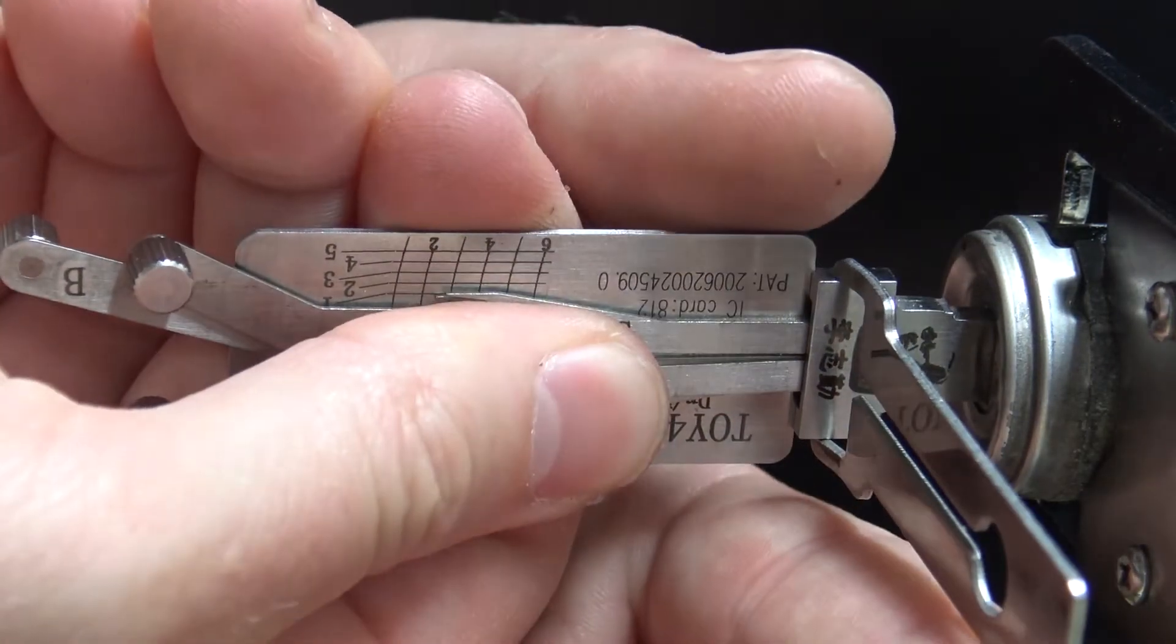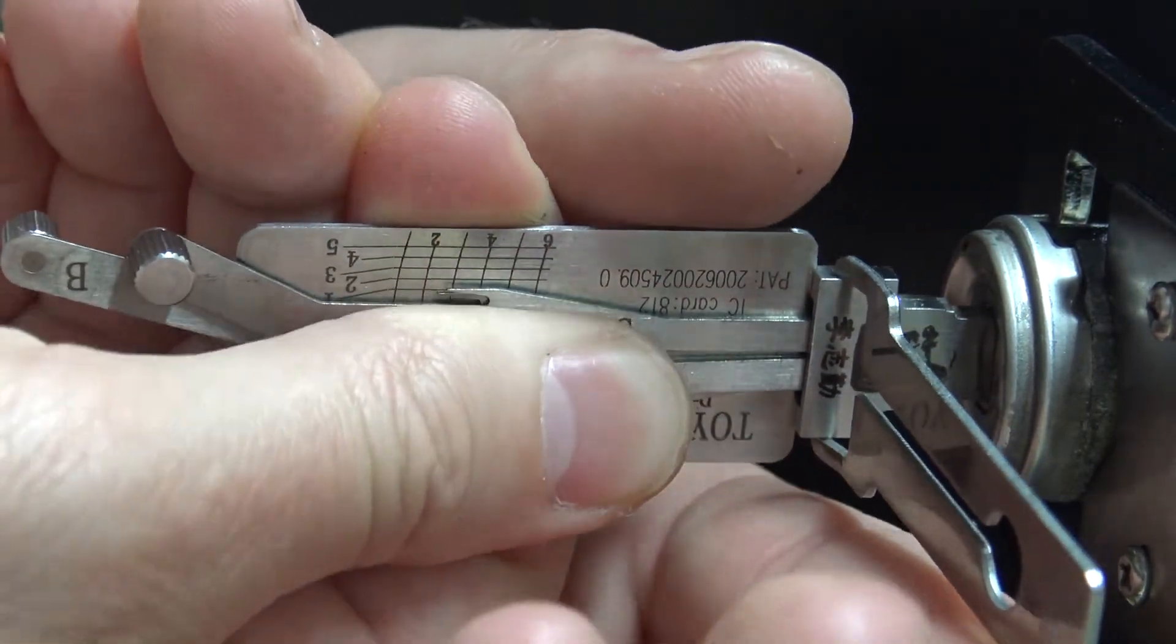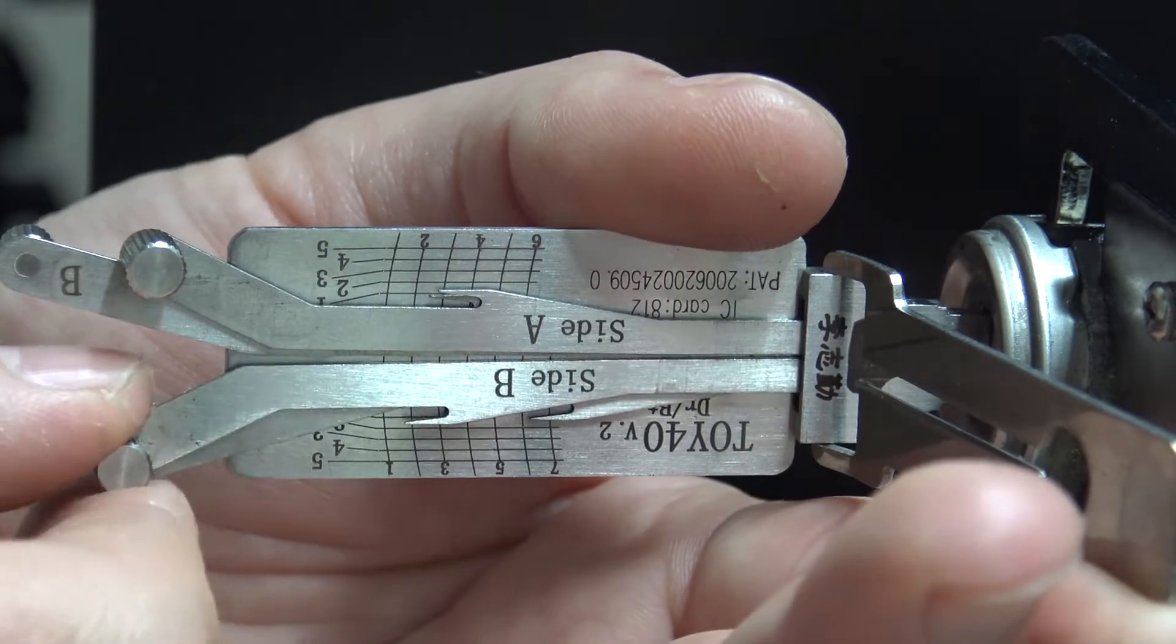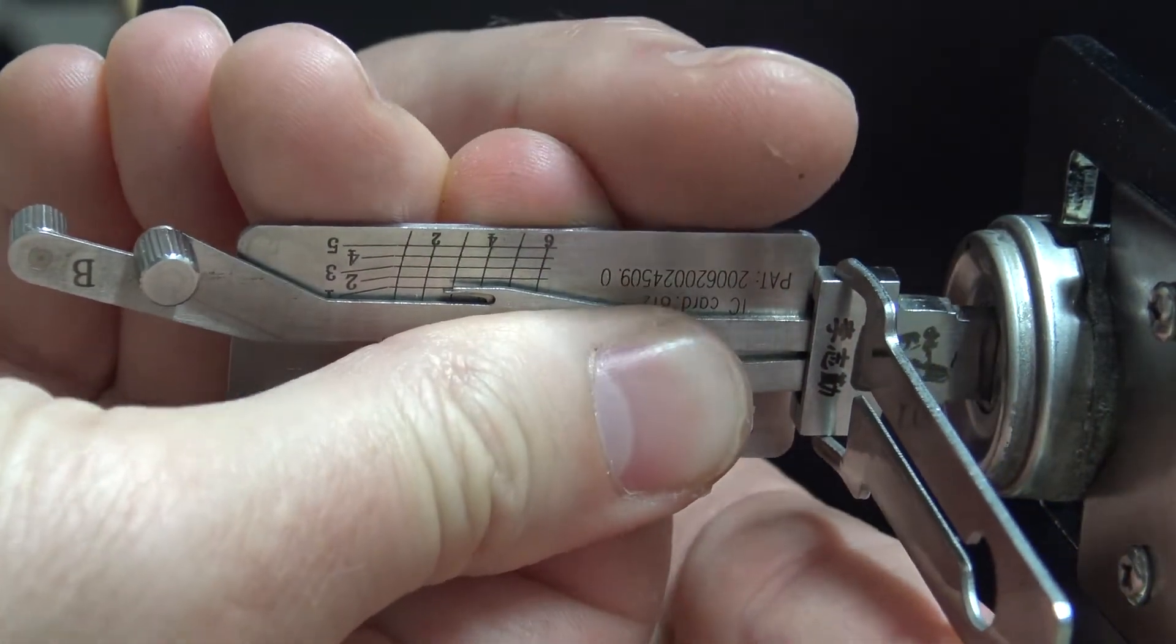So I'll get started here picking it. And then once I decode it here, I'll show you a little trick with Instacode on getting a key code and getting the rest of the cuts for the A track.